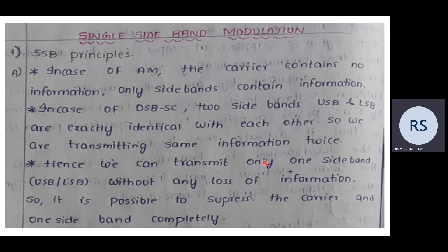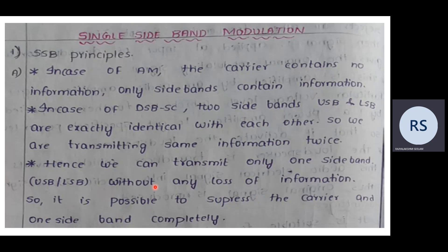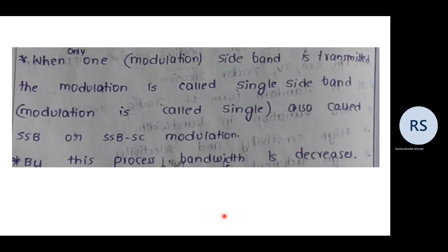Since the two sidebands are identical, we can transmit only one sideband — either the upper sideband or the lower sideband — without any loss of information. It is possible to suppress the carrier and one sideband completely. When we transmit either the upper sideband or the lower sideband, that is called single sideband modulation.